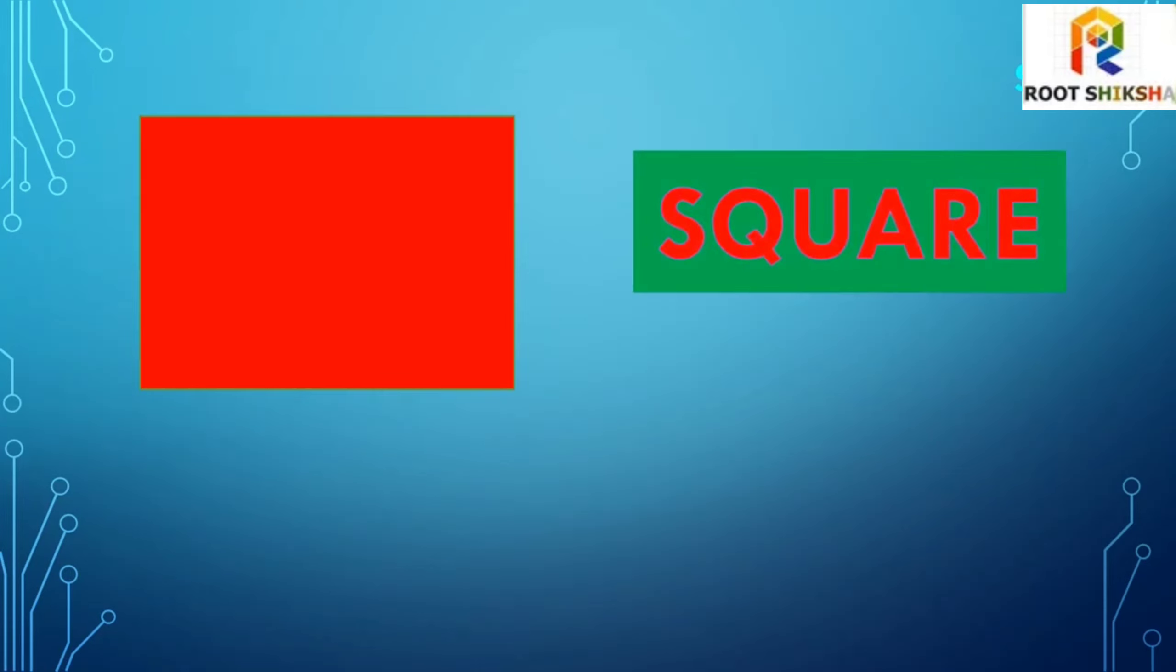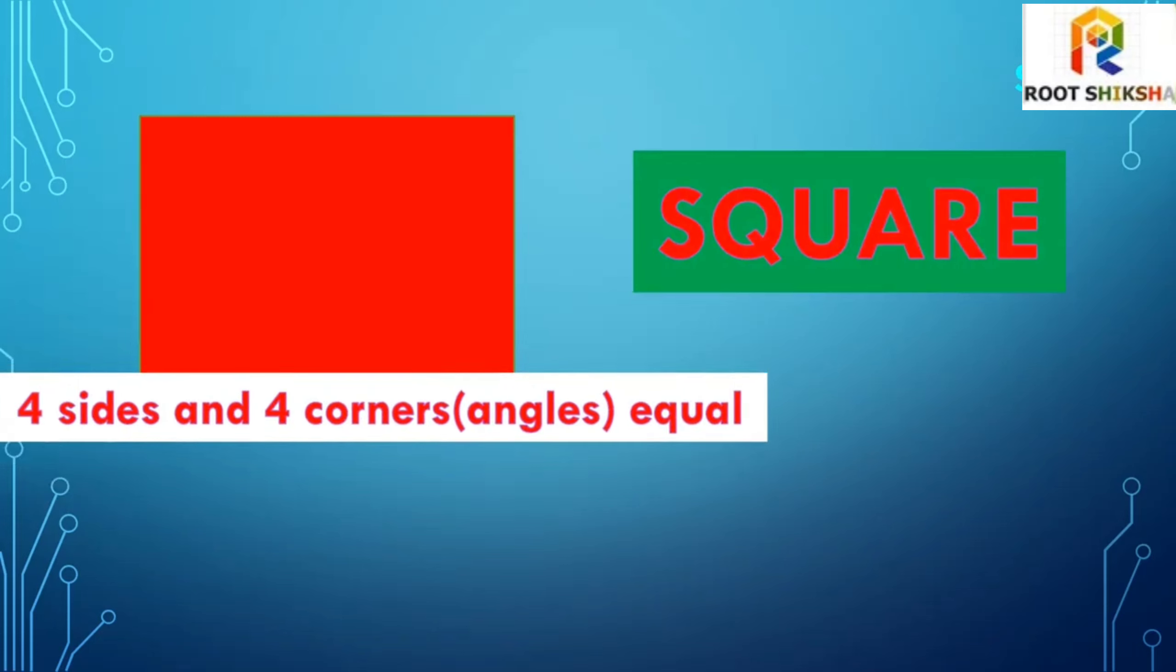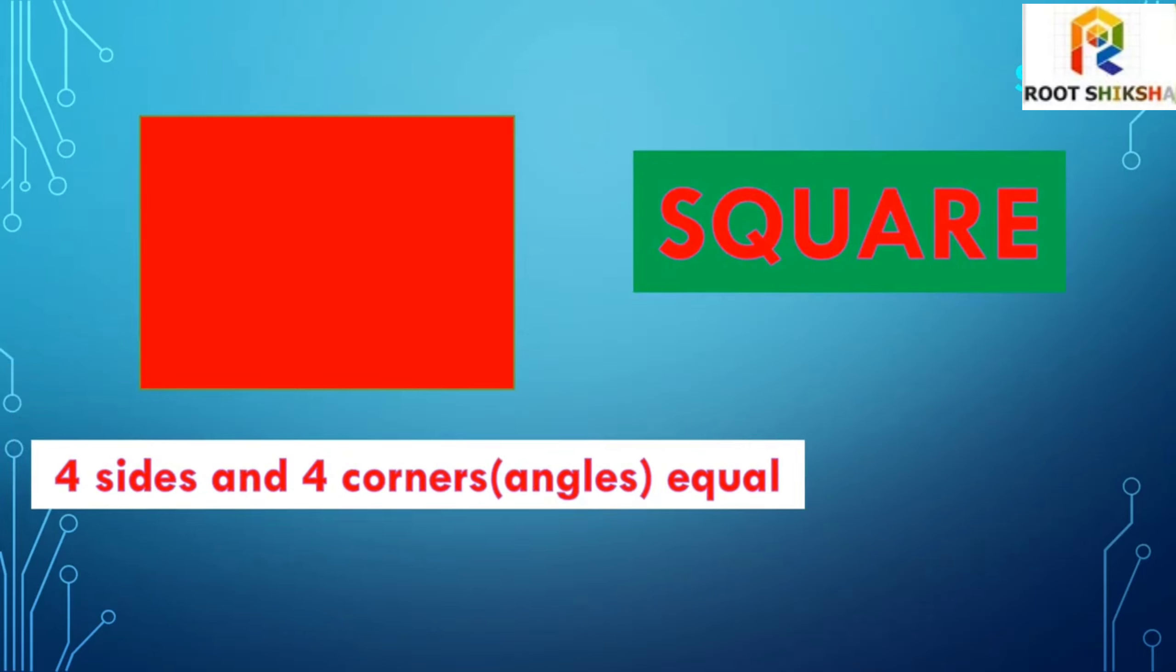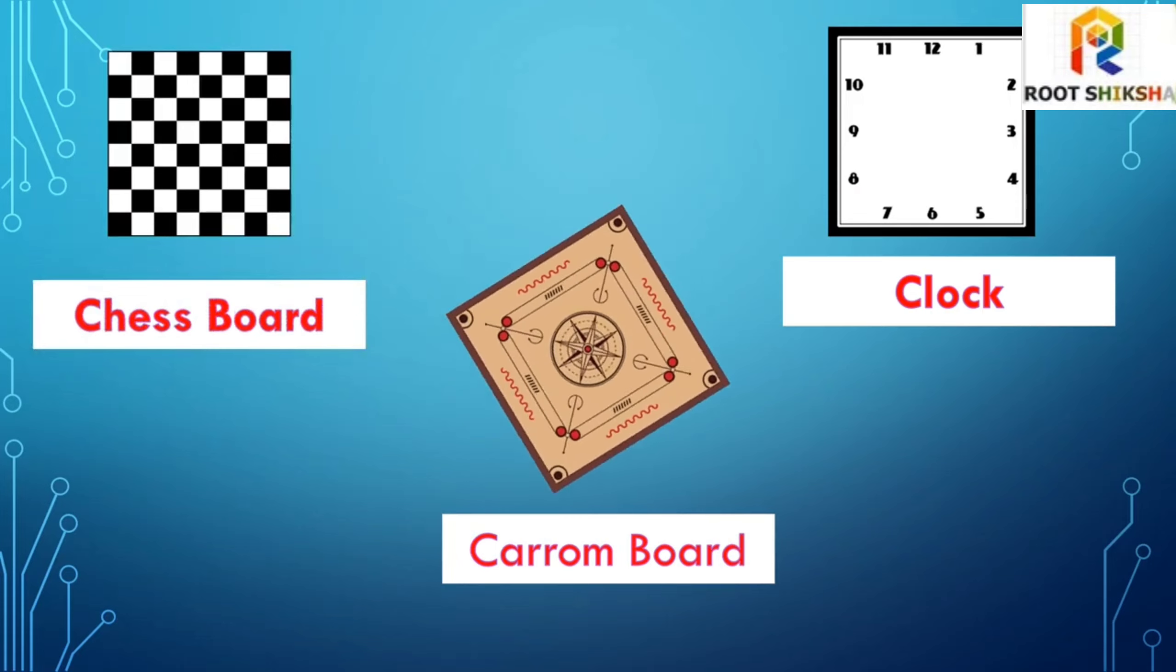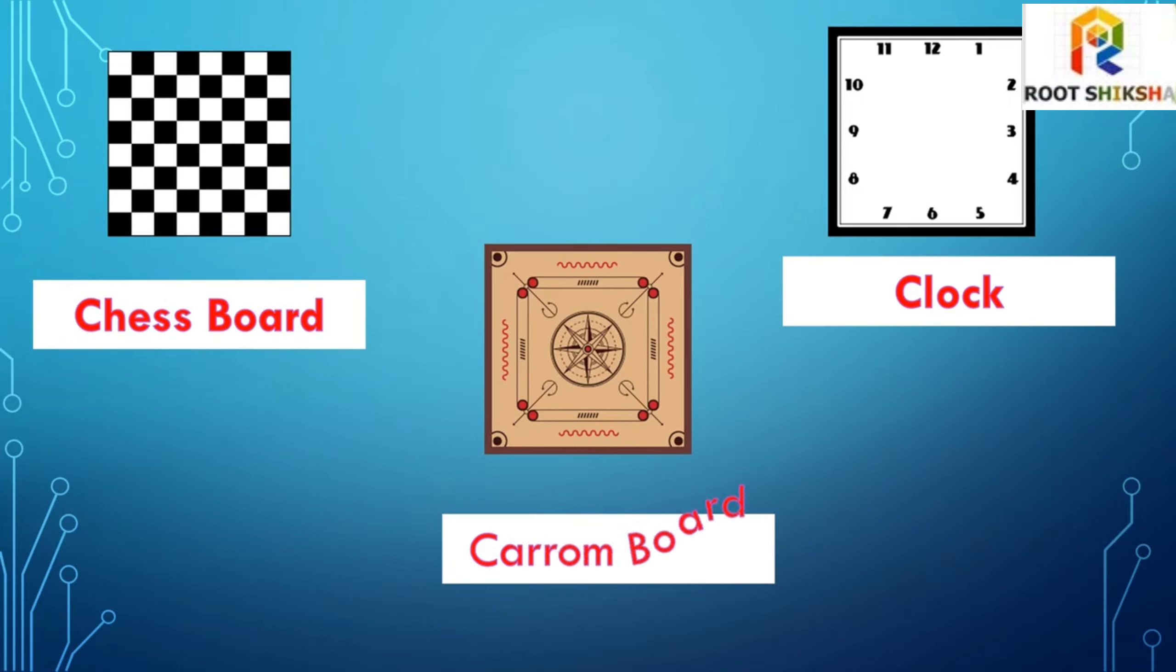Square. Four sides and four corners equal square. For example: chessboard, carrom board, clock.